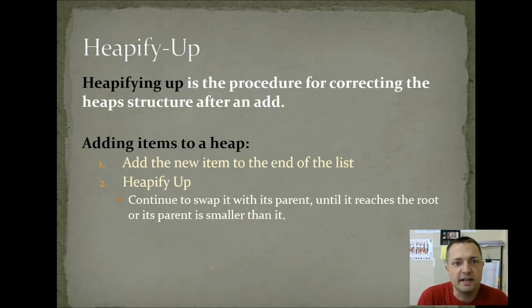Heapify. Heapifying up is the process for correcting a heap's structure after an add. When you add to a heap, you'll add an item to the end of the list that will not be in the correct spot. Then you heapify up, which is you continue to swap with your parent until you become the root or your parent is smaller than you. We'll see examples of this when I actually do an example and do some adds. So, on a min heap, you keep swapping up while you're smaller than your parent.